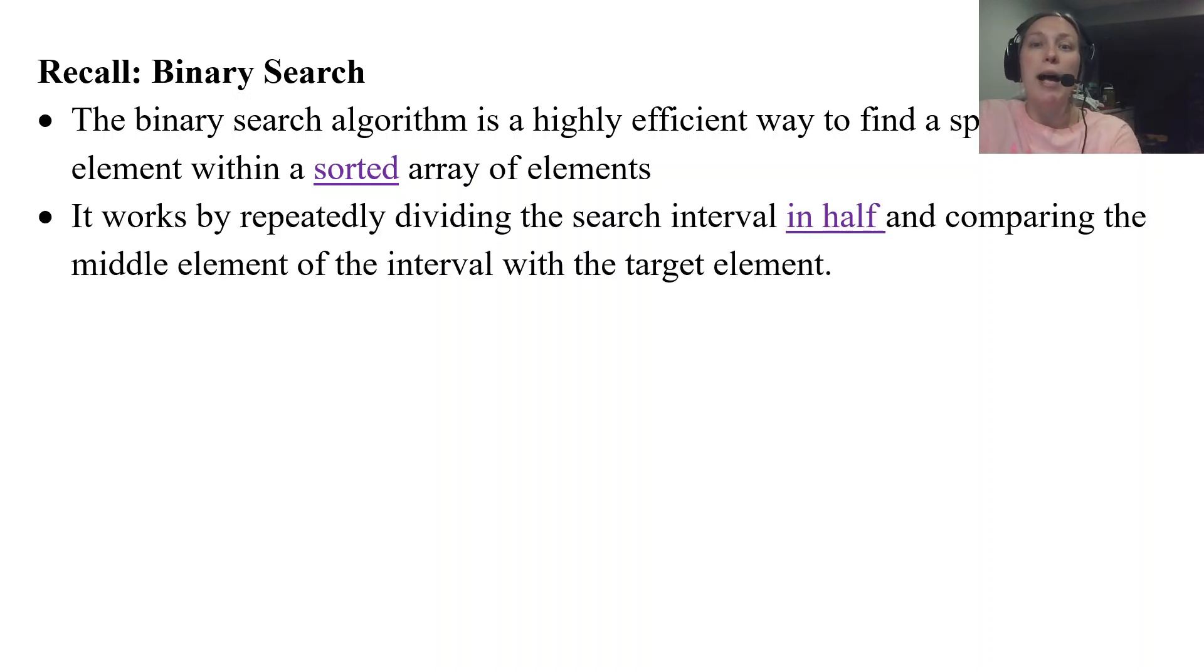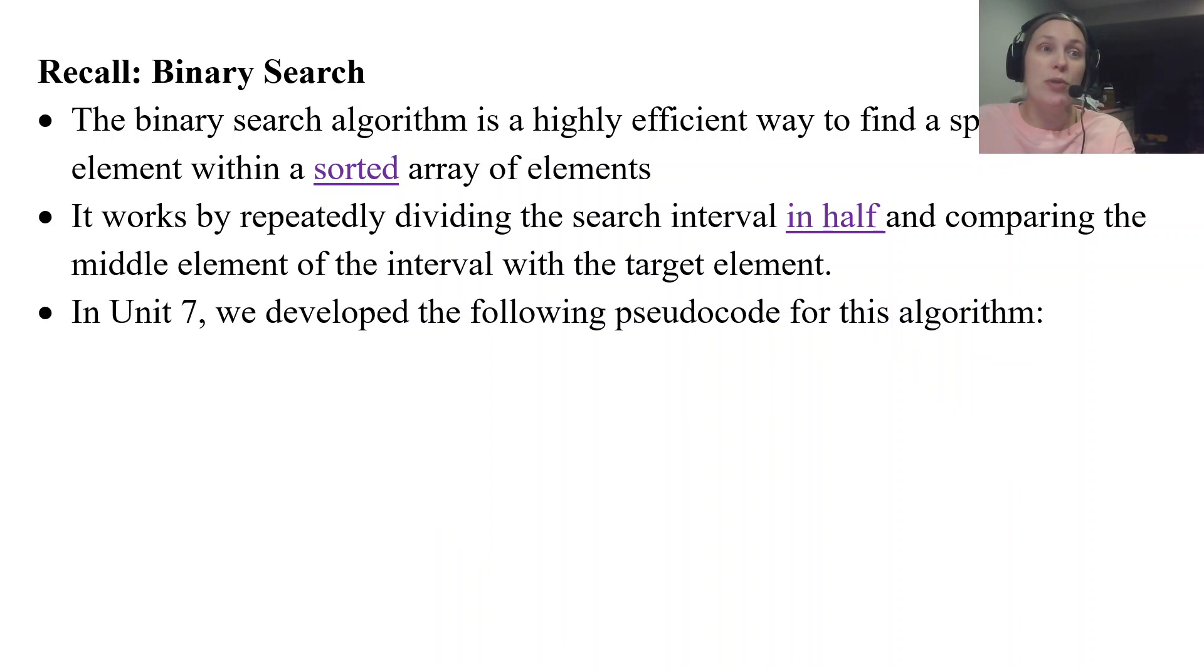It works by repeatedly dividing your search interval in half, basically dividing your array in half and trying to narrow it down to find the element you are looking for. The pseudocode that we developed back in unit 7: first we have to find what our midpoint is and we do that by taking our low index and our high index, adding them together and dividing by 2.